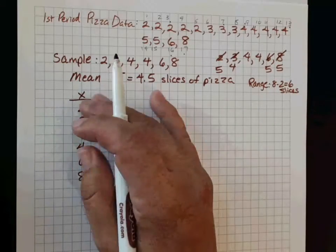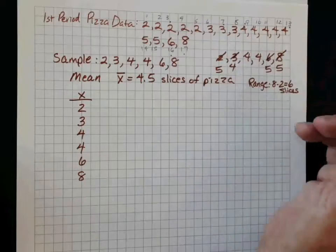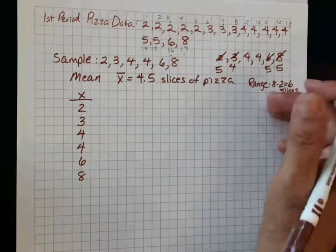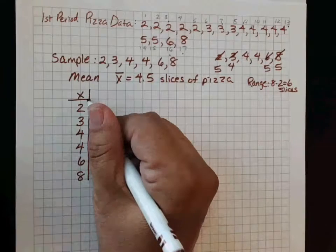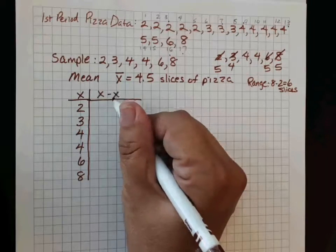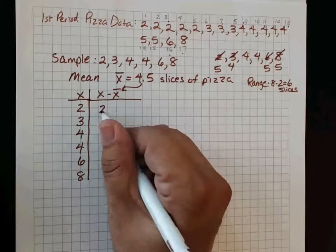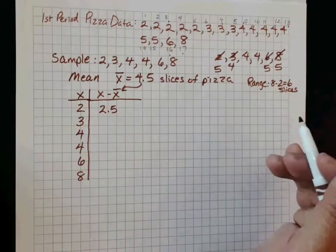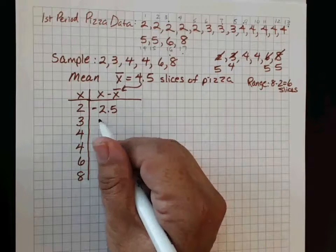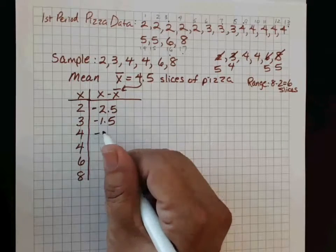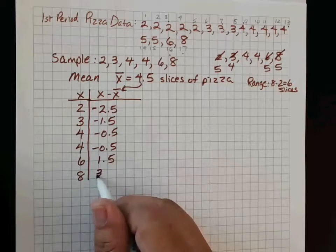The problem is that range doesn't really describe where a good chunk of the data is. You can see it's kind of tight right around here, and this 8 is a little further away — the range doesn't capture that. What if I took the difference of how far away each point is from the mean? So X-bar is 4.5. Then: 2 minus 4.5 is negative 2.5; 3 minus 4.5 is negative 1.5; then negative 0.5, negative 0.5, positive 1.5, and positive 3.5.